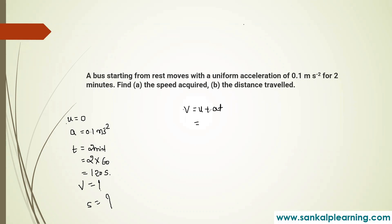We can calculate the final velocity using V equals U plus A into T. U is 0, acceleration is 0.1, time is 120 seconds. So 0.1 into 120 equals 12 meter per second. This is the final velocity.